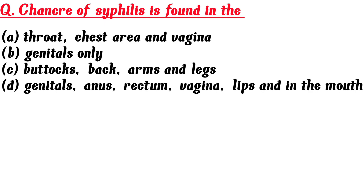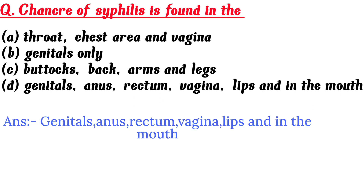An infection of syphilis is found in the: A. Throat, chest area and vagina, B. Genitals only, C. Buttocks, back, arms and legs, D. Genitals, anus, rectum, vagina, lips and in the mouth. Answer is D. Genitals, anus, rectum, vagina, lips and in the mouth.